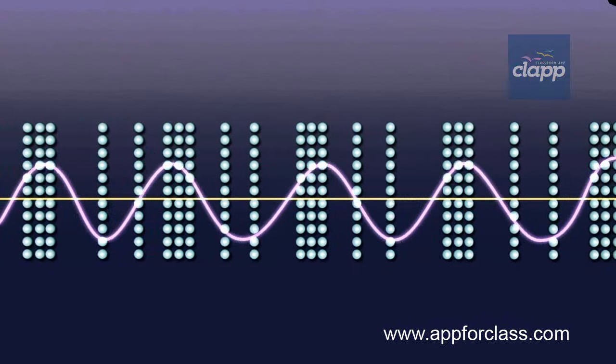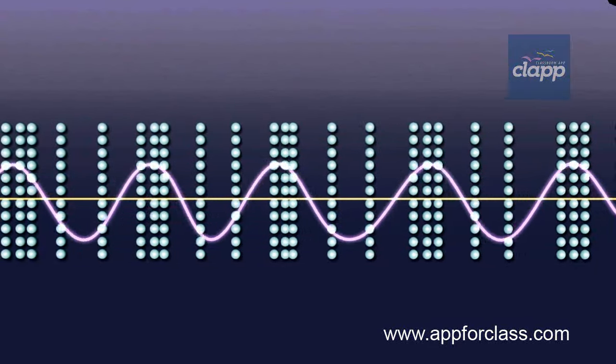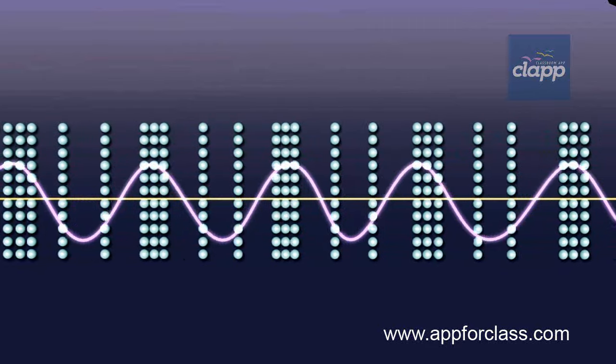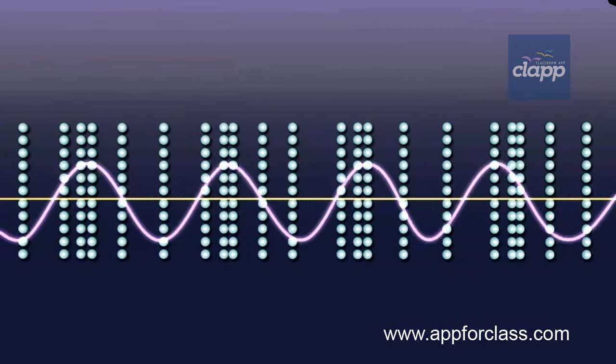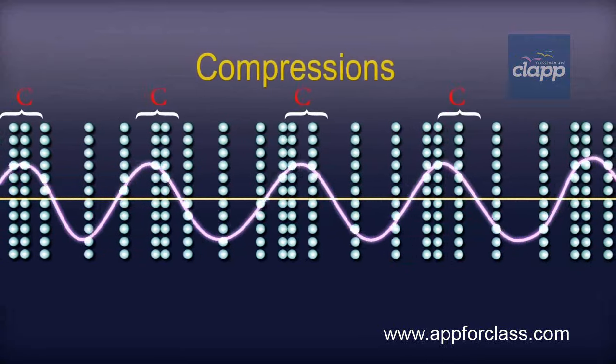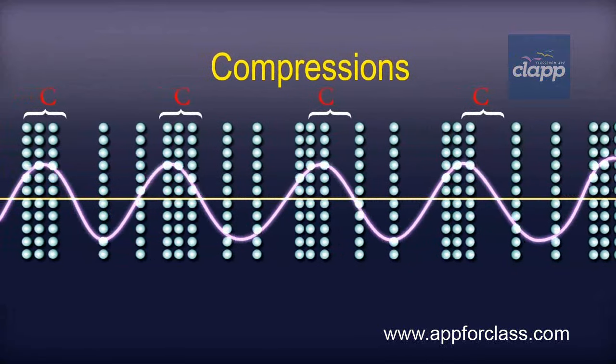The region of high pressure is experienced in places where the particles of the medium are very close to each other. This is known as compressions. It is denoted by C.